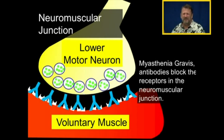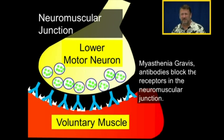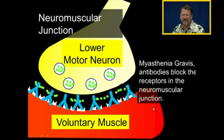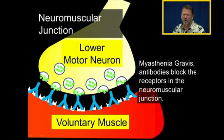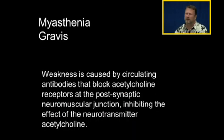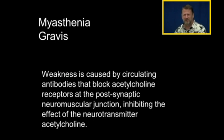To give an understanding of how the system works, we'll talk about myasthenia gravis. Myasthenia gravis is a disease process that causes weakness. In myasthenia gravis, antibodies block the receptors at the neuromuscular junction. These antibodies are normally designed to attack viruses, bacteria, and other germs, but here the body has made antibodies against its own nicotinic receptors at the neuromuscular junction. Myasthenia gravis is weakness caused by circulating antibodies that block acetylcholine receptors at the postsynaptic neuromuscular junction, inhibiting the effect of the neurotransmitter acetylcholine.